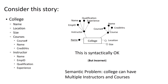However, this doesn't really capture all of our business rules correctly, because colleges can have multiple instructors and courses. The way this is currently modeled, if we had multiple courses, we would have to repeat all of our instructor values for every course. Or if we have multiple instructors, we would have to repeat all of the course values for every instructor. We wind up with a ridiculous amount of redundant data in this approach.